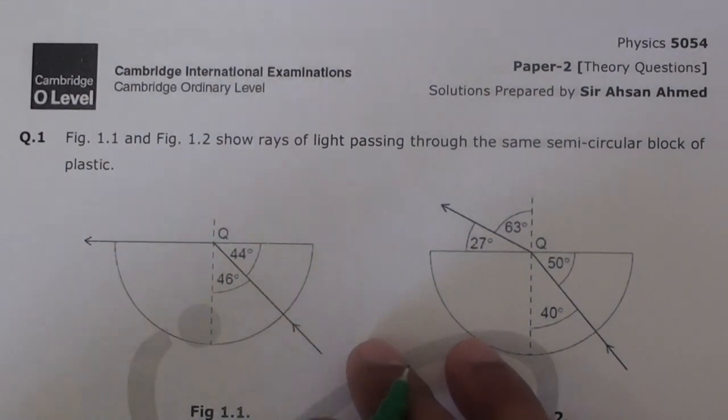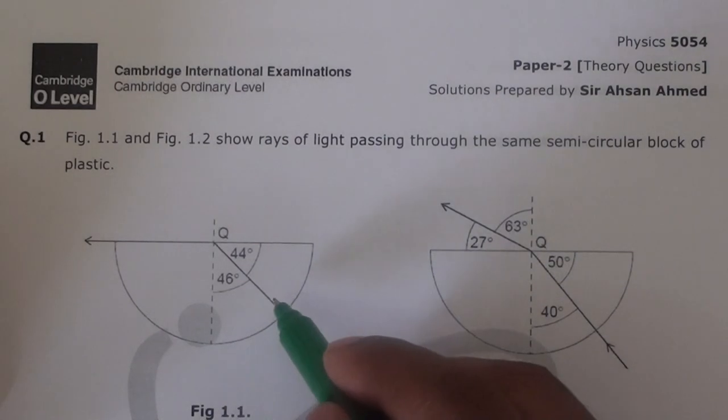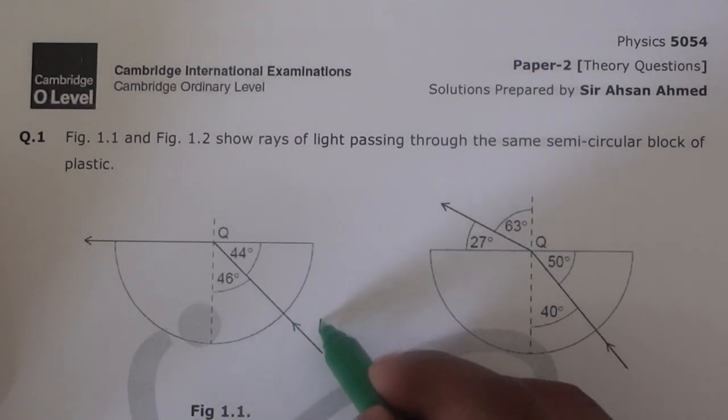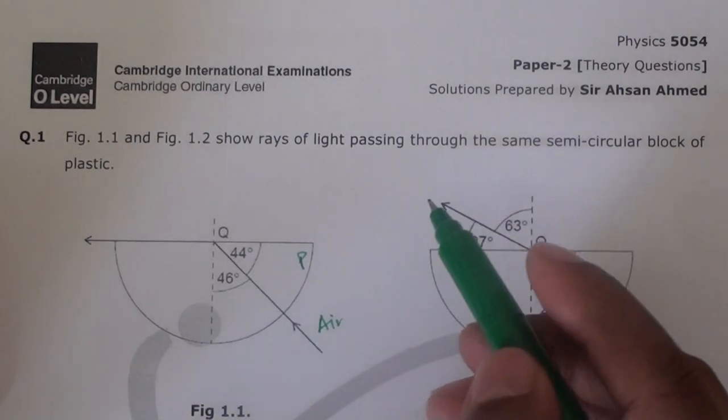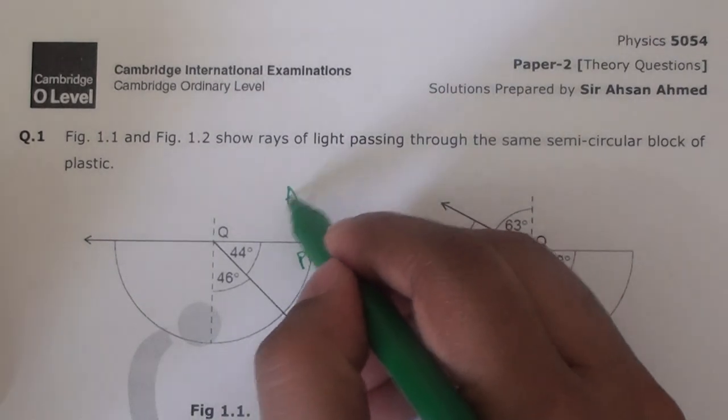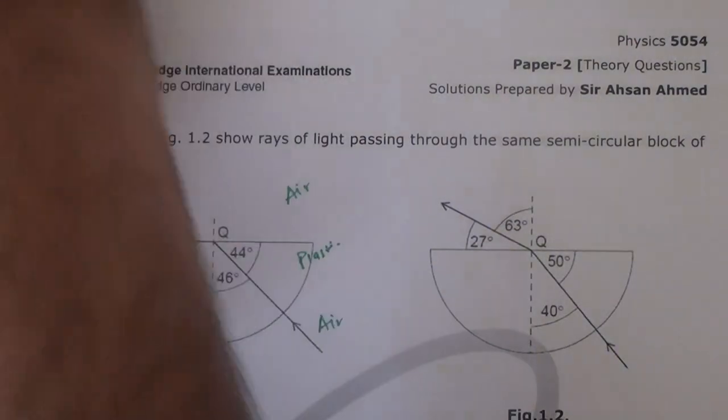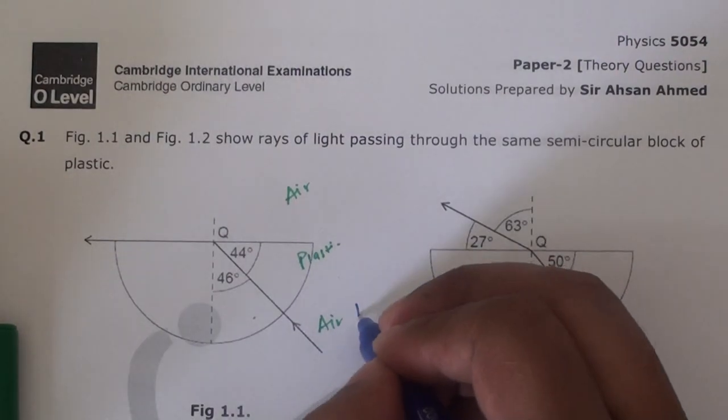Light is coming through air, obviously, and this is the medium - let's call it plastic - and then back to air. If air is the lighter medium and plastic is the denser medium, we know that first the light is going from air to the denser plastic medium.